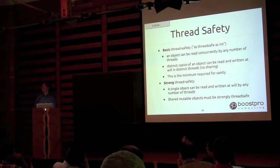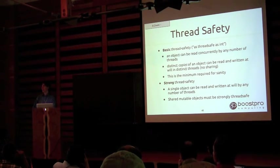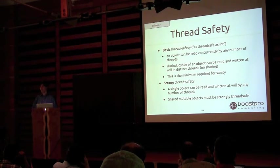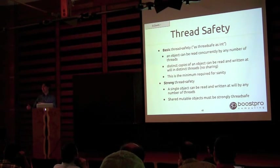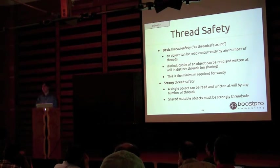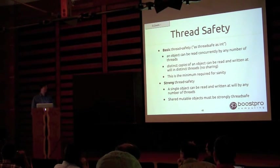Another way to look at it: basic thread safety means the object isn't hiding a global behind it — there's no mutable shared state. Consider the illusion of const references: you get a const reference and think the object won't change, but you don't know if there are mutable members or if someone is const-casting it. You have no guarantee that the state when you received it is the same when you use it.